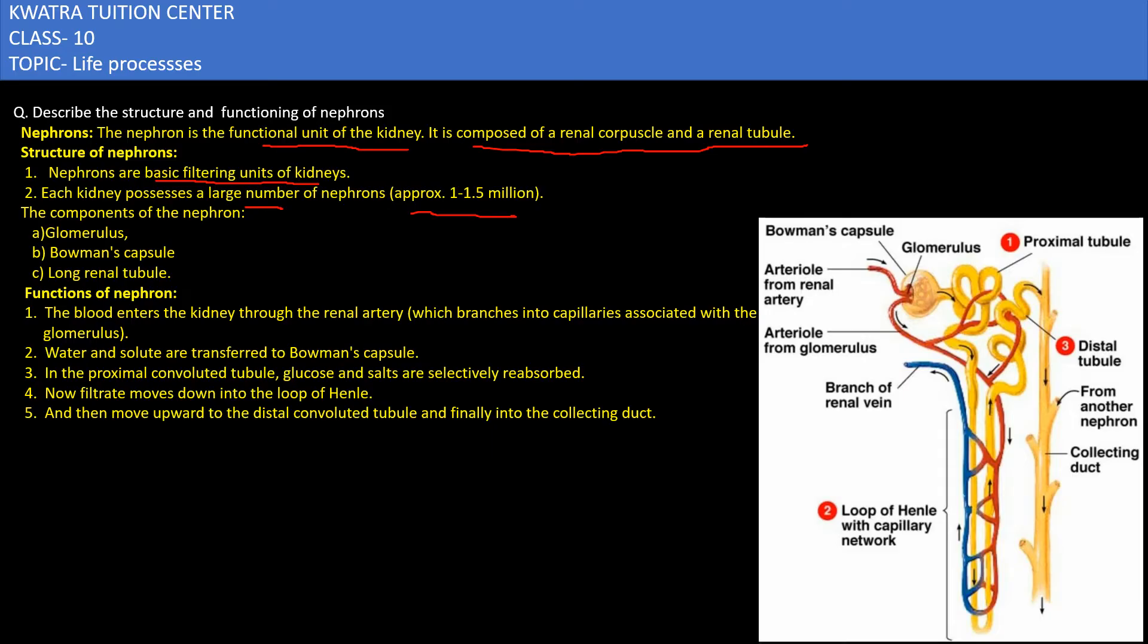Now the nephrons have three components. The first one is glomerulus, the second one is Bowman's capsule, and the third one is long renal tubule. We can see that a structure or a figure of nephron is given here. We can locate all these three components. The glomerulus is present here, the Bowman's capsule is present here, and the renal tubules are present here.